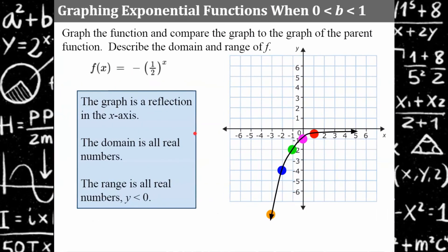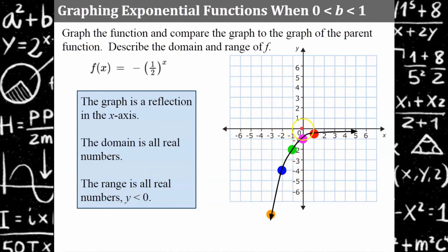For x equals negative 2, the output is negative four. For x equals negative 3, y is negative eight. Draw in the smooth curve. Describing the graph: it is a reflection in the x-axis — you can see it's flipped over. The domain is all real numbers. The range is all y values less than zero — y will never equal zero and will never touch the x-axis.